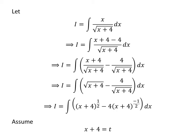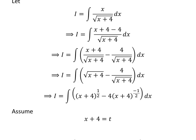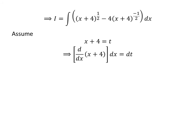Let us further simplify the integral by application of the substitution method. Assume x plus 4 is equal to t. Taking the differential of both sides, derivative of x plus 4 with respect to x times differential of x is equal to differential of t. We know the derivative of x is 1 and the derivative of constant 4 is 0, so differential of x is equal to differential of t.